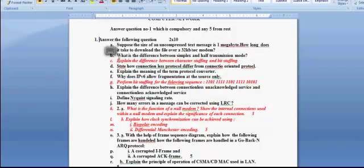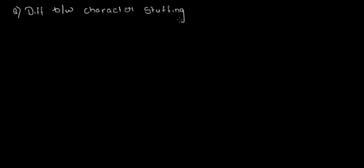Explain the difference between character stuffing and bit stuffing. The link layer, before sending out the data, divides the data into frames. The concept of character stuffing and bit stuffing comes into picture when the data to be sent is divided into frames.